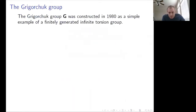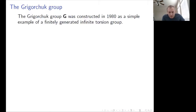The Grigorchuk group was constructed in 1980 as a simple example of a finitely generated infinite torsion group. Torsion means that every element is of finite order. So in this group, every element has finite order, while the group itself is infinite and at the same time finitely generated. That was, at the time, the simplest example of such a group, and it probably still is. A subsequent study showed that this group has many other properties, and being an infinite torsion group is not even the most important of them.